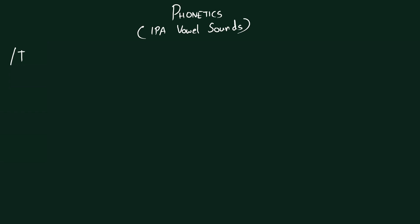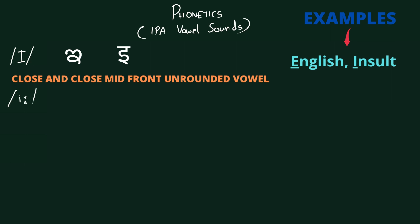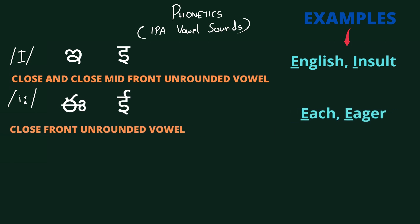The first symbol we are going to learn is /iː/. It is a close, close-mid front unrounded vowel. Examples are: each, eager. This sound is used in British English and also appears in Telugu and Hindi equivalents.